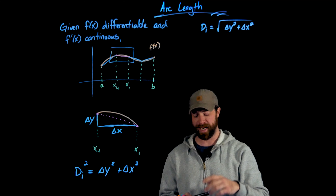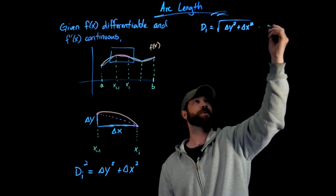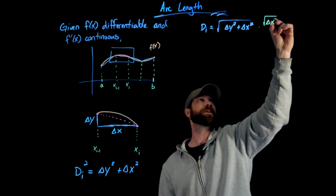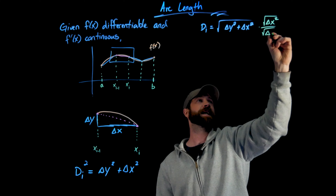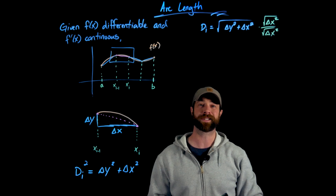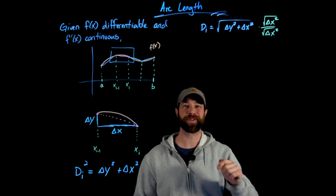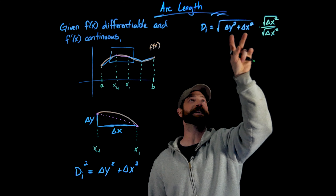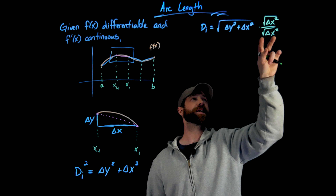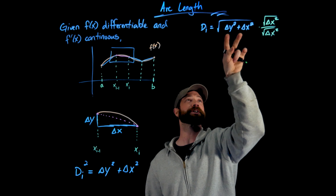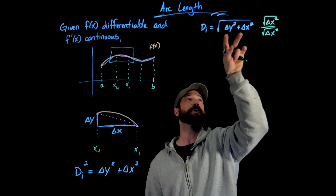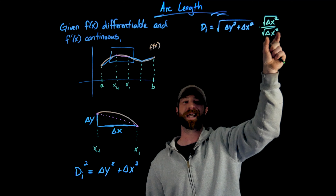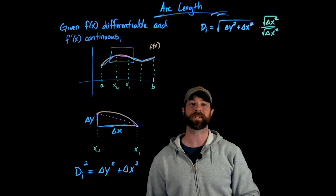The trick is that I'm going to multiply by a factor of one — a tricky factor of one. I'm going to multiply by the square root of delta x squared over the square root of delta x squared. The reason I'm using this square root notation is so that I can interact this factor with the terms inside. I can move this factor underneath and distribute it to both terms. Under the square root, the denominator is just delta x squared.